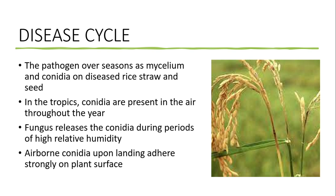The disease cycle — the overwintering of this pathogen takes place as mycelia or conidia on rice straw and seed. Plant debris and seeds are the primary inoculum sources for rice blast. In tropical regions, conidia are present in the air throughout the year. The fungus releases conidia during periods of high relative humidity, and airborne conidia, upon landing, adhere to the leaf surface and germinate there.